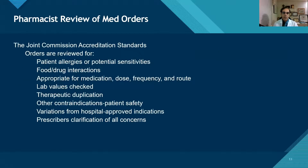The Joint Commission, when they refer to medication order review, really covers a lot of things we should all be looking at when reviewing med orders: patients' allergies and sensitivities, interactions, the right dose, labs if they're relevant to the therapy, any duplicate therapy, other contraindications based on comorbidities, variations of hospital-approved indications, and then we can clarify any concerns that the prescriber or provider has.